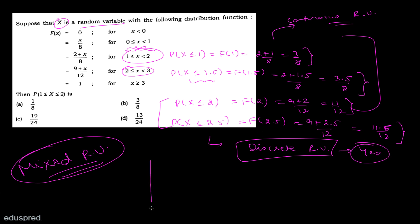CDF को plot करते हैं — x-axis पर x है, y-axis पर F(x)। x < 0 पे F = 0। 0 से 1 के बीच F = x/8, जो एक line है, और 1 included नहीं है तो open circle। 1 पे F का value होगा 1/8 लेकिन included नहीं। जब 1 ≤ x < 2 है, तो 1 पे value है (2+1)/8 = 3/8 — यानी 1 पे jump है। यह line 1 से 2 तक जाती है, 2 included नहीं।